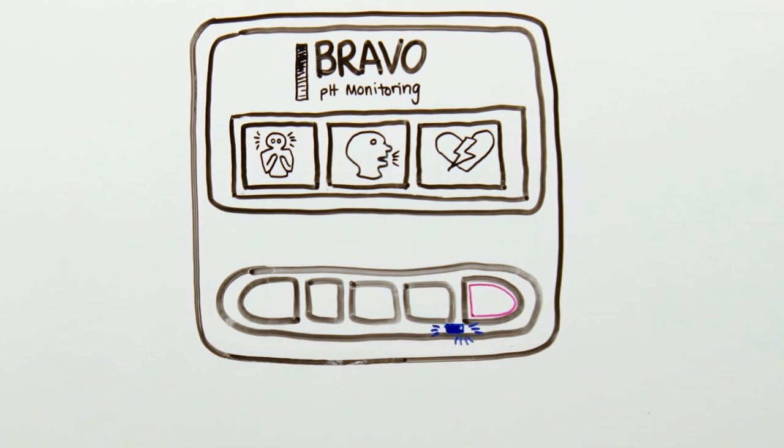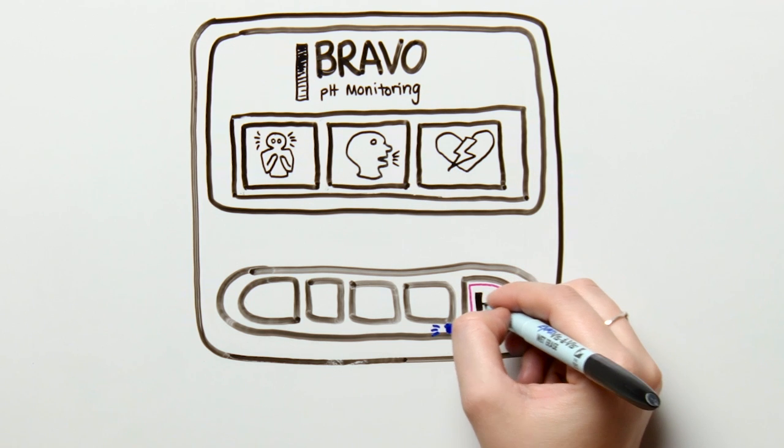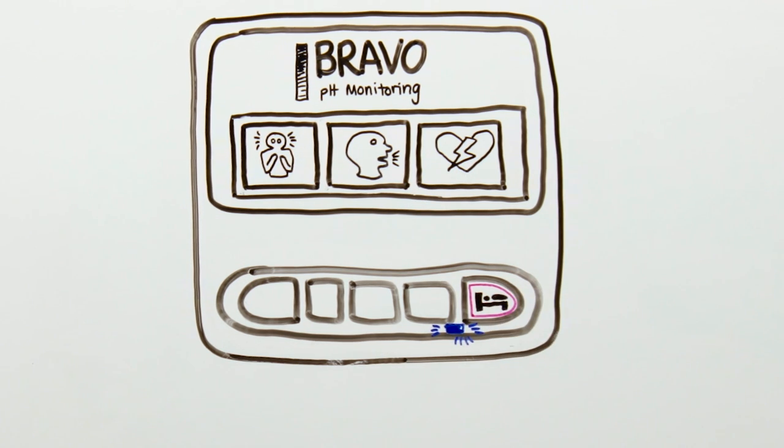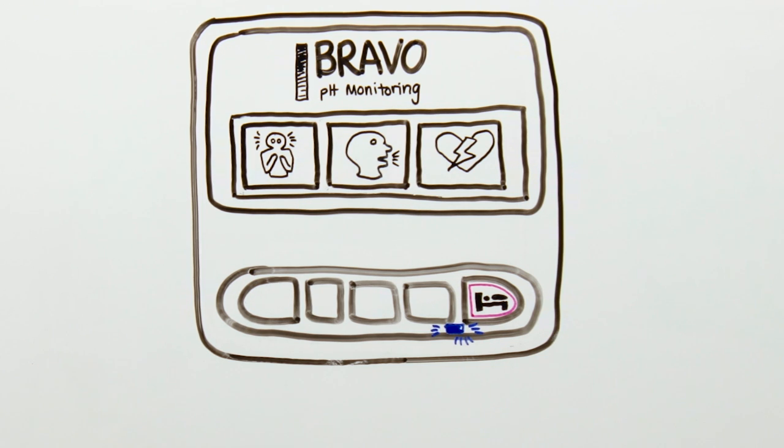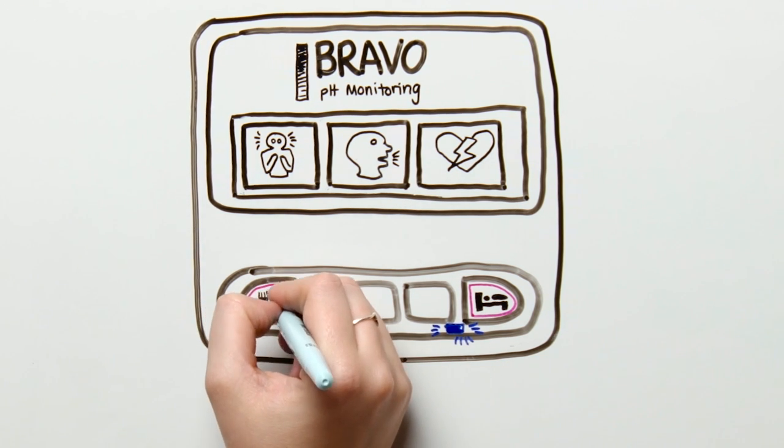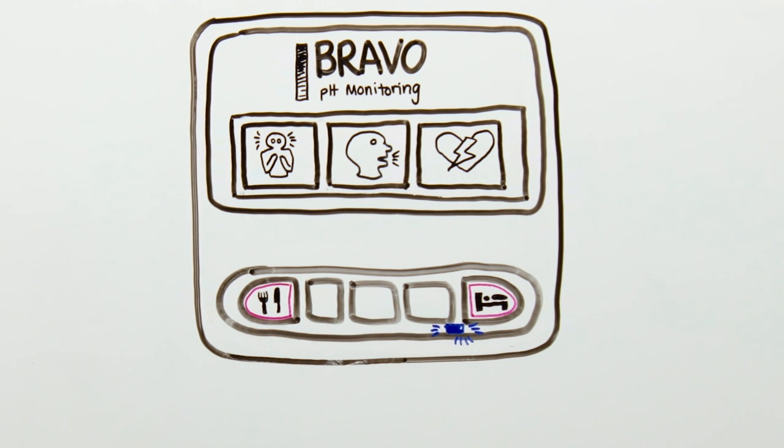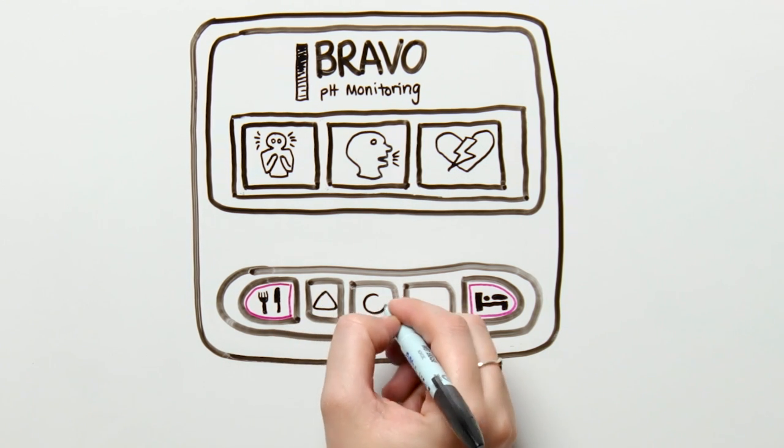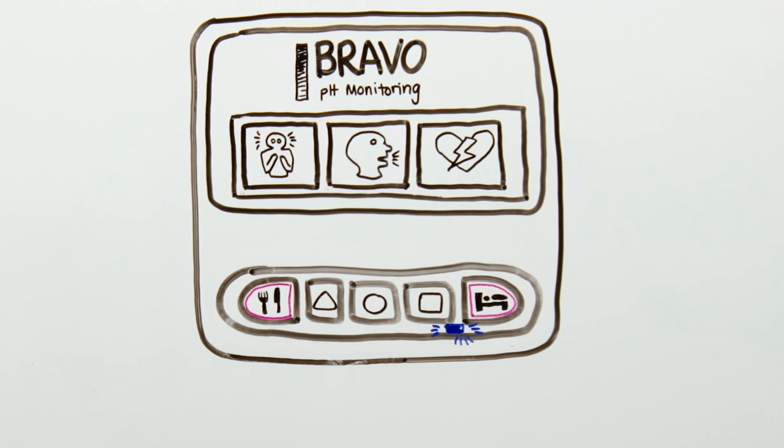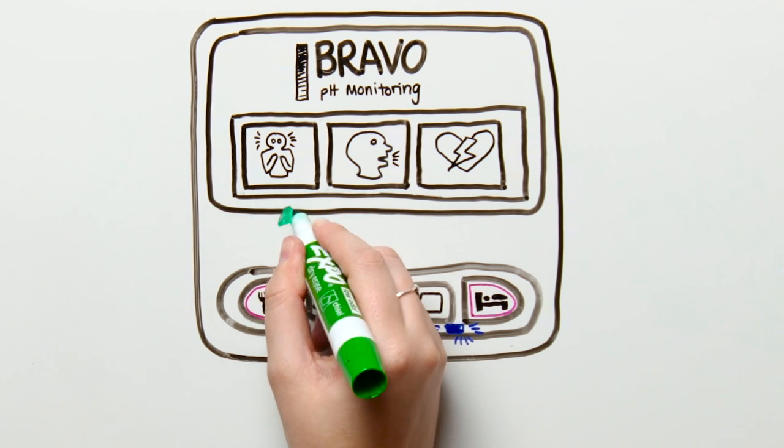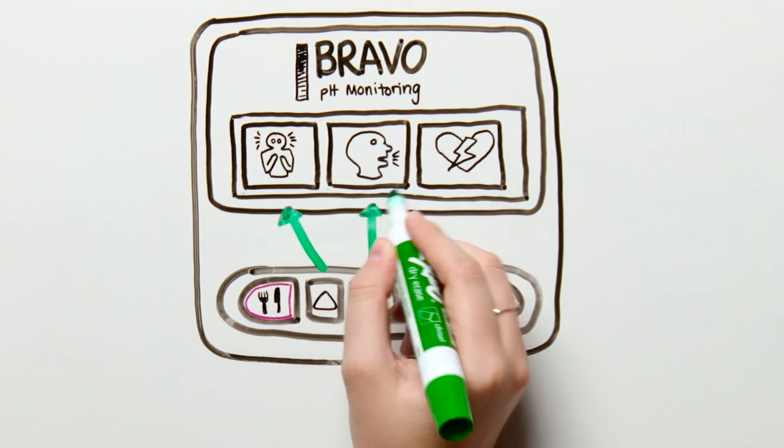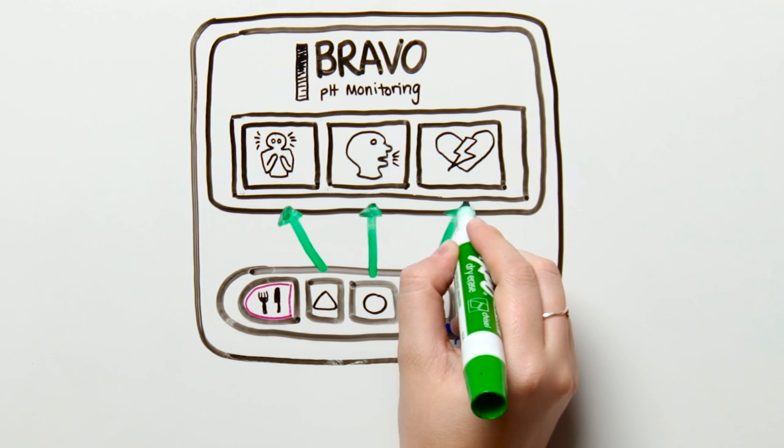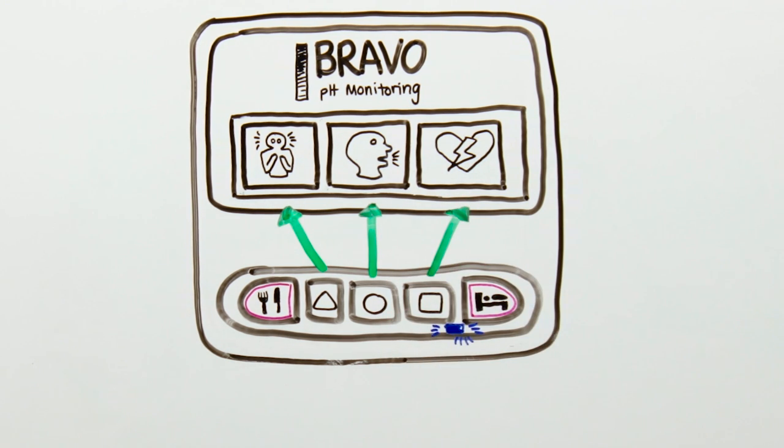This is the sleeping and lying down button. Lying down also means lying back in a recliner or lying on a sofa, not just going to bed. This is the meal button. Push the meal button for eating and drinking. These are your symptom buttons: chest pain, regurgitation, or heartburn. The icons correspond with the triangle, circle, and square. If you have different symptoms, we can change them to correspond with your particular symptoms.